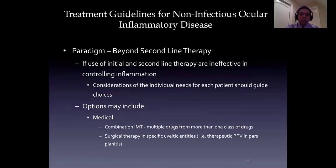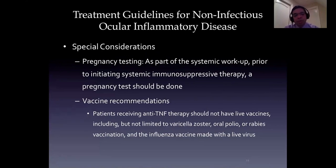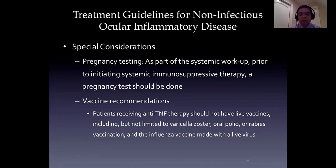Sometimes we use combination therapy, and occasionally we may perform surgical interventions such as a therapeutic/diagnostic pars plana vitrectomy in patients who have severe vitritis unresponsive to therapy. In women of childbearing age and men who are interested in having children, we have to consider issues of sterility in men and potential risk to the fetus in pregnancy - this may also alter our choice of agents. Regarding vaccinations in patients under immunosuppressive therapy, we should avoid live virus vaccines in anybody receiving anti-TNF therapy or any immunomodulatory therapy. Live virus vaccines include varicella zoster, polio, rabies, and the nasal influenza vaccine.